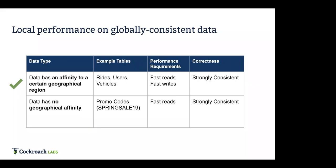The goal is local performance while still having globally consistent data. Some data has an affinity to a geographical region — rides, users, vehicles all tend to take place in a single city. The Mover team wanted very fast reads and writes for those tables while maintaining a strongly consistent view of data. That's already done using a feature called geo-partitioning, giving them local reads and writes. Now they want to add new features — their marketing team wants promo codes.